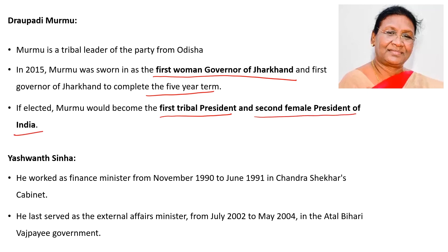Yashwanth Sinha was the cabinet Finance Minister and the cabinet External Affairs Minister under Atal Bihari Vajpayee's government.